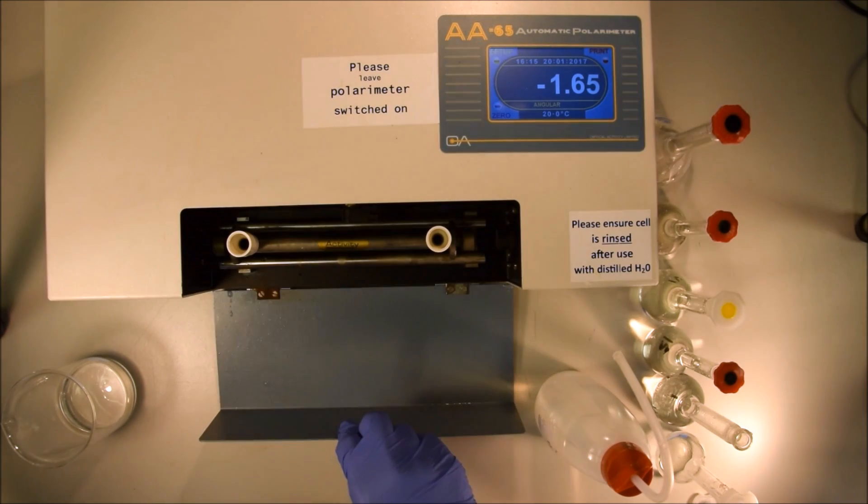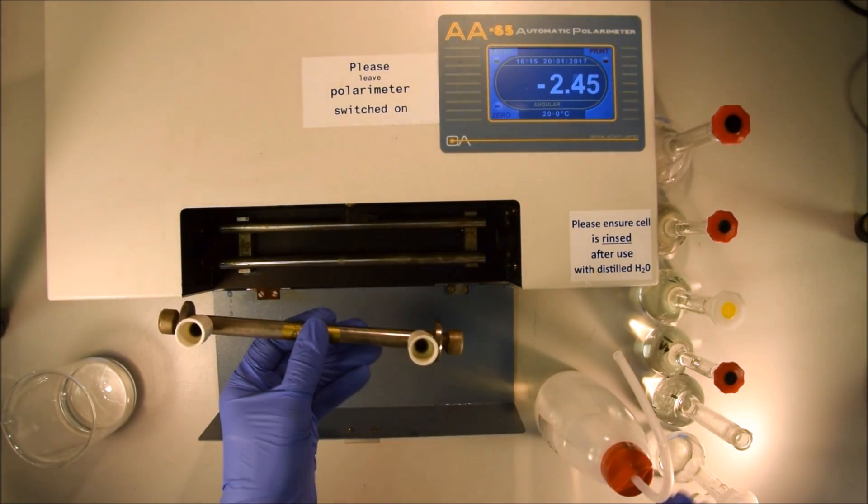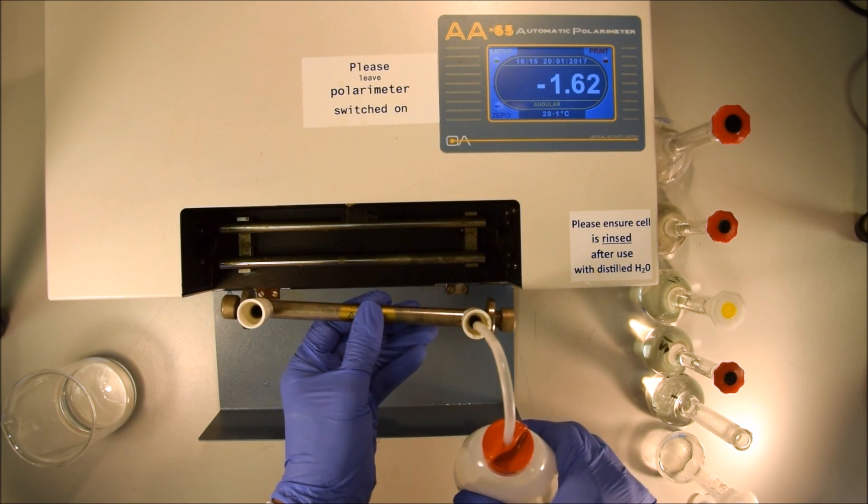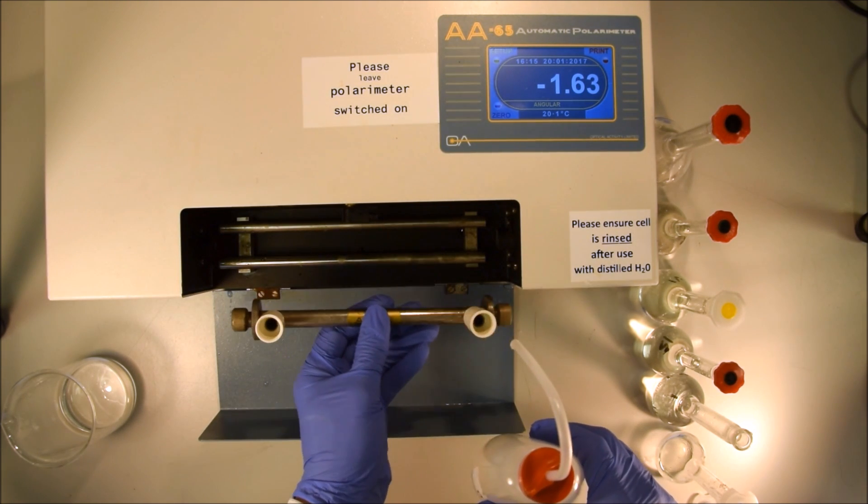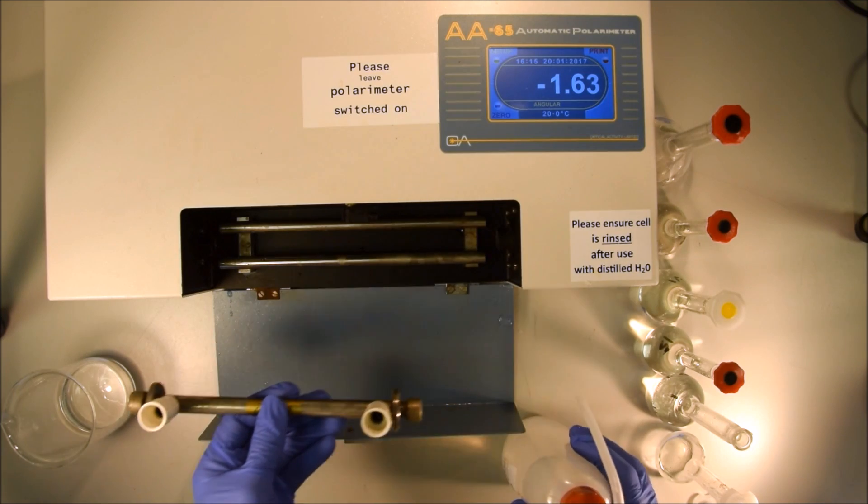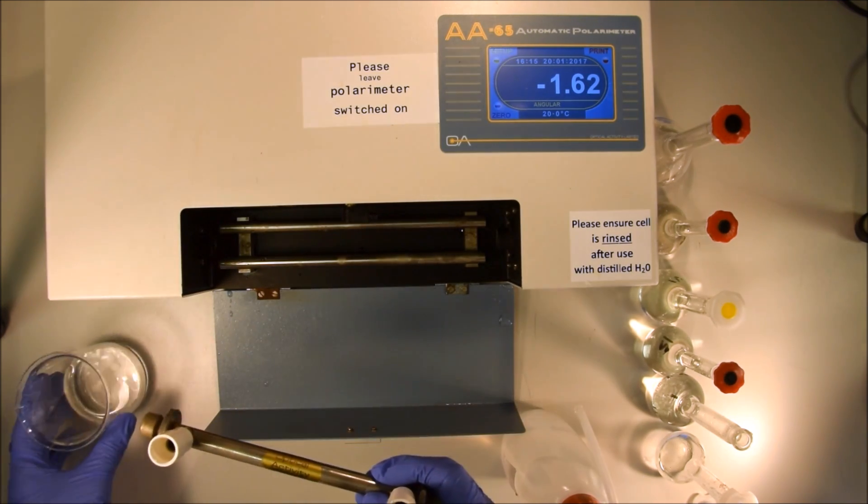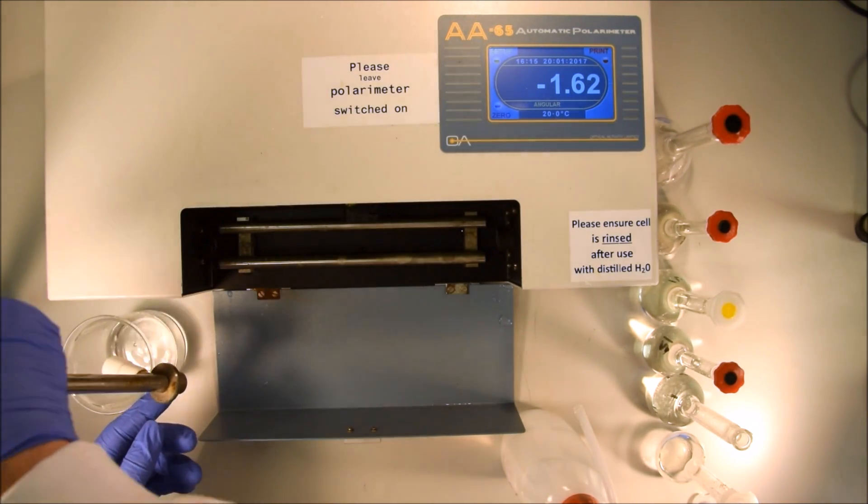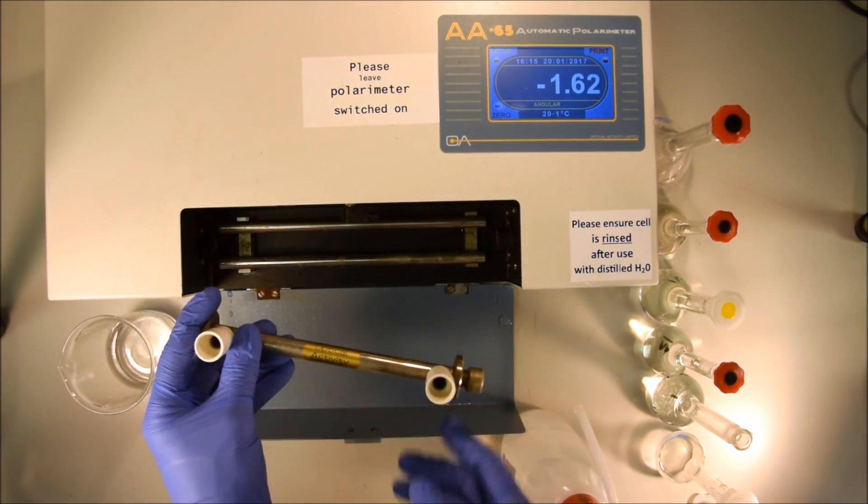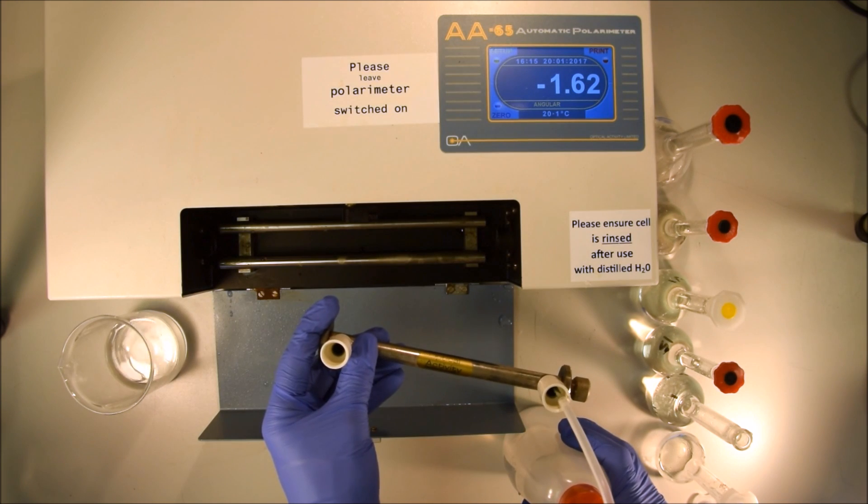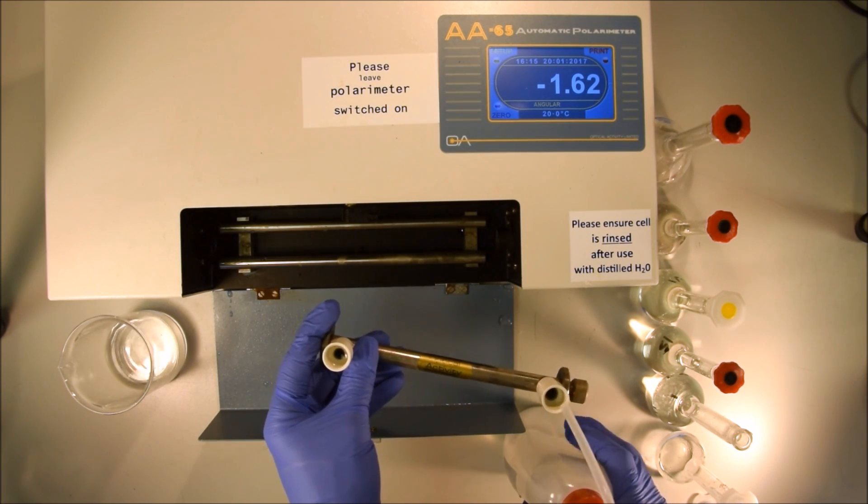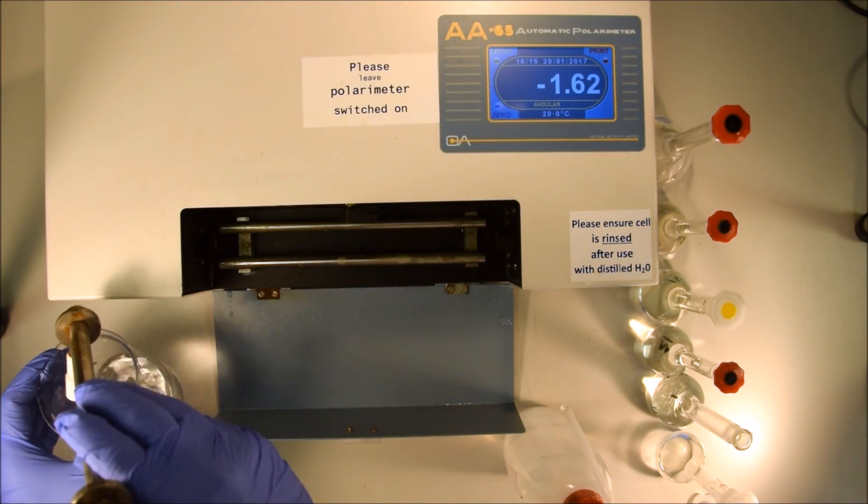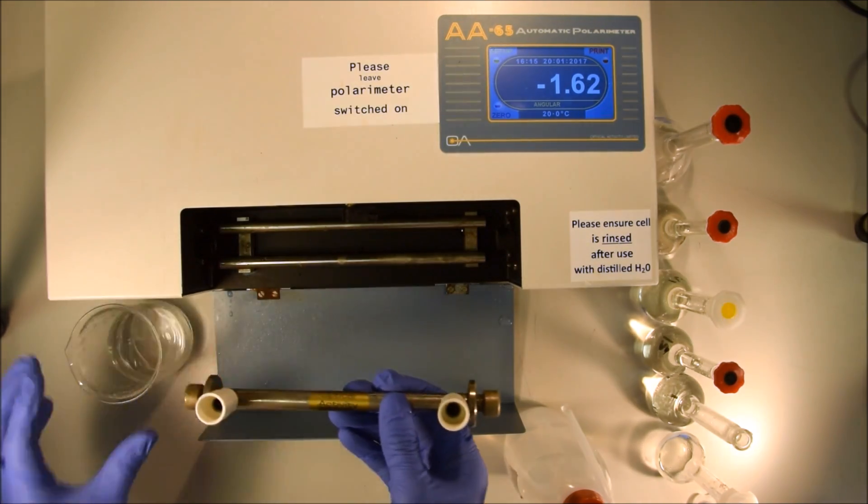Now we're on to making our measurements. This is a polarimeter and inside the polarimeter is a cell. The cell is a tube with an open end at either side. The first thing we want to do is clean it out. You can put in water in one end and it'll come out the other end. You have to be a little bit careful when pouring stuff into it because if you overfill it, it'll go in one end and out the other and make a mess.